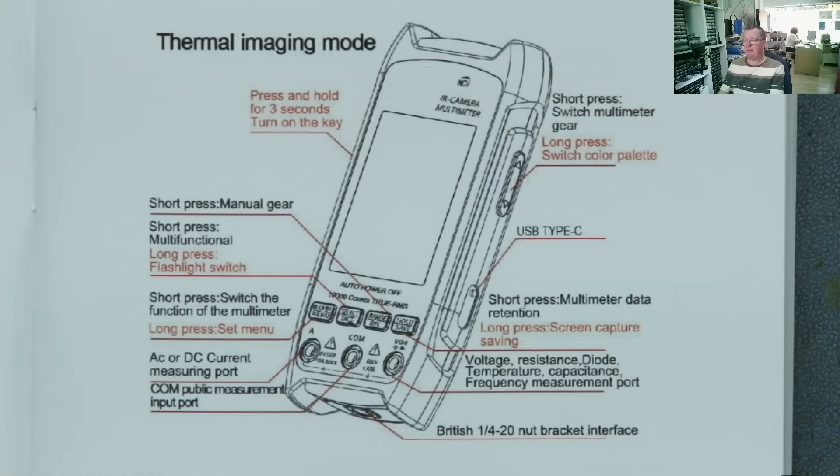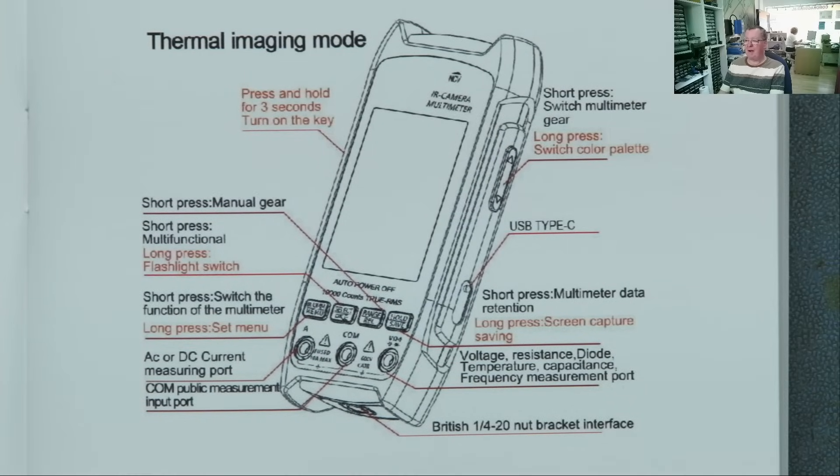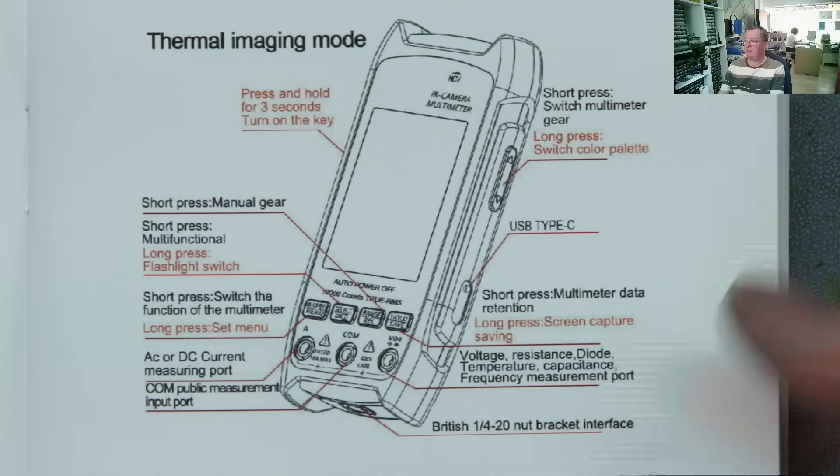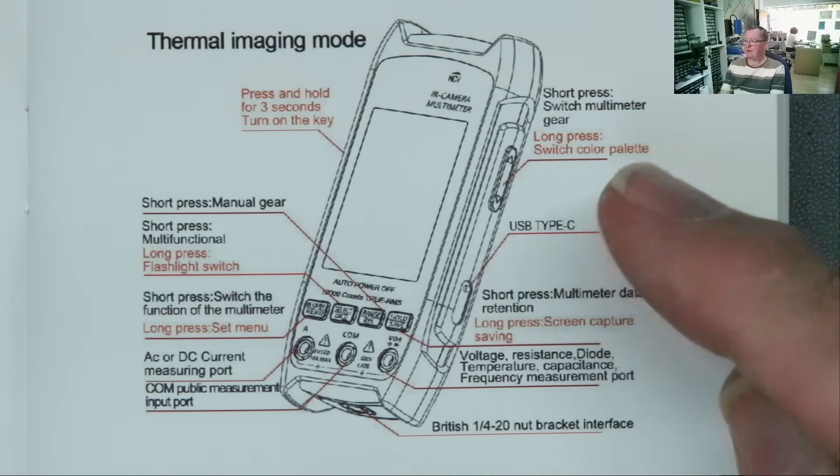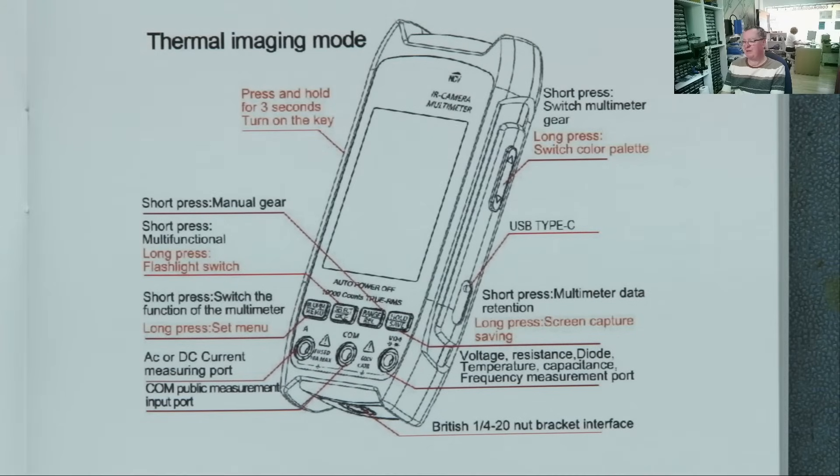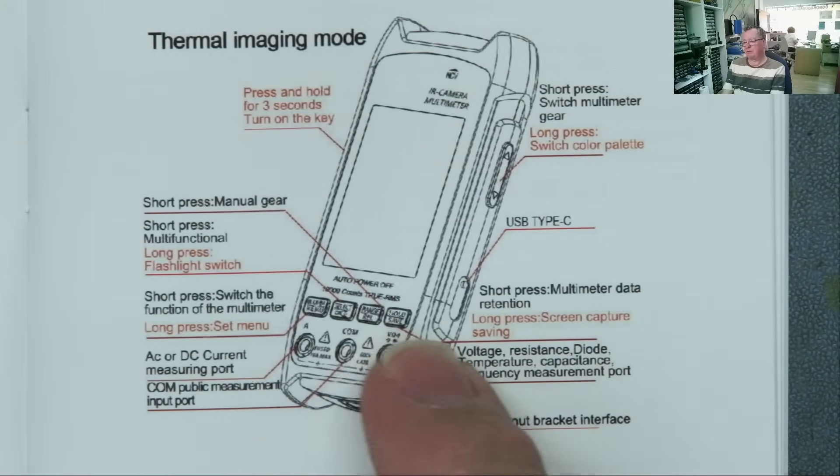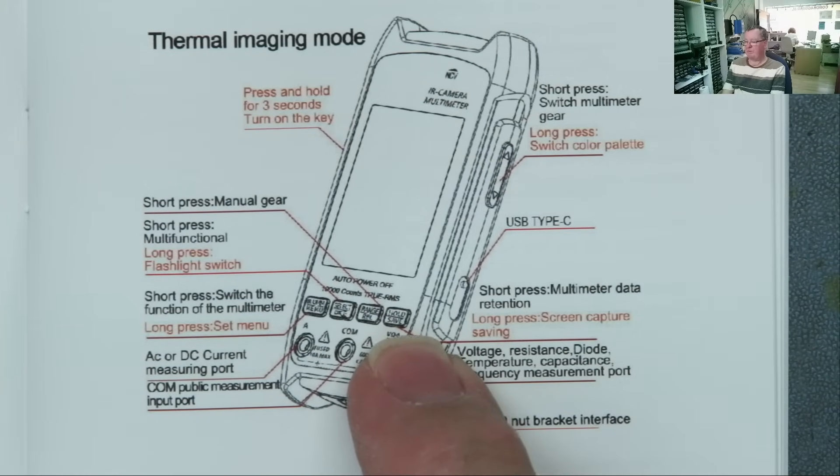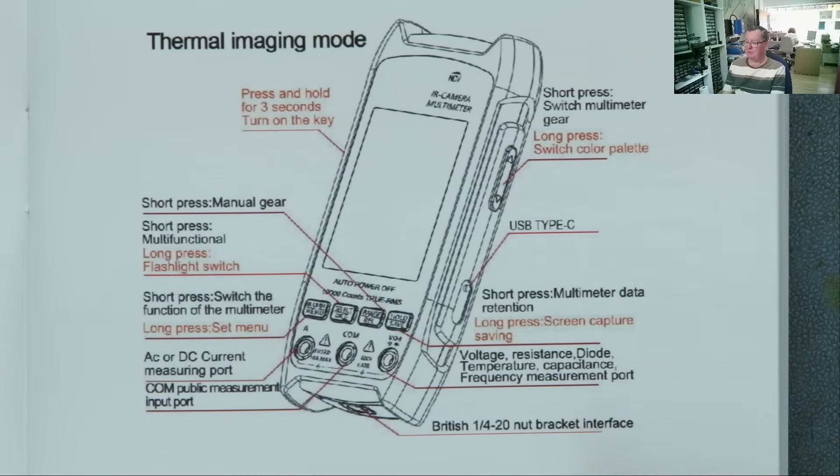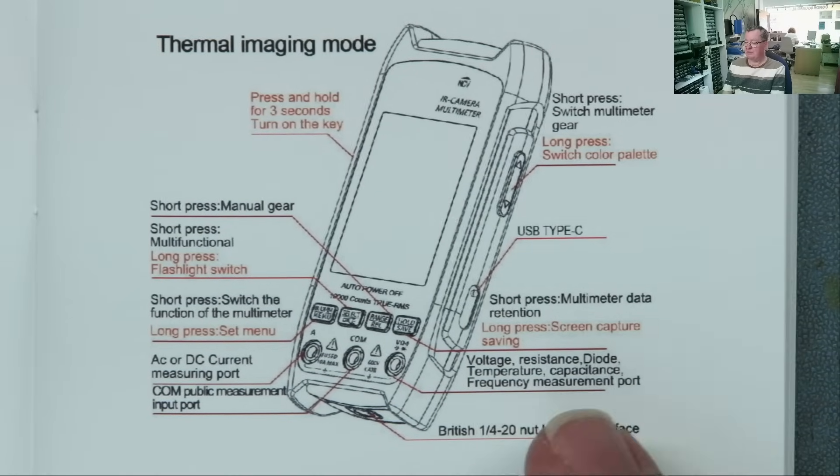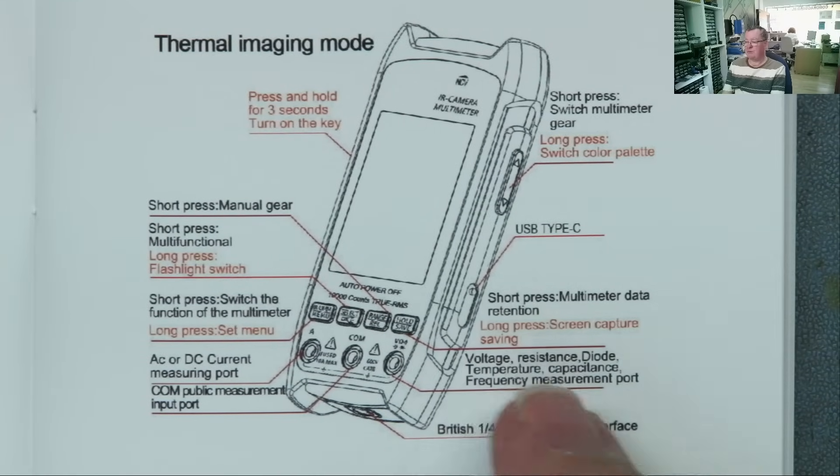There is a quick description of the buttons. Power. Switch color palette. Long press. Short press change multimeter. This means range when they say gear. Short press. This is your hold on the multimeter. Long press to save. Yeah, screen capture. Voltage, resistance, diode, the various ranges.